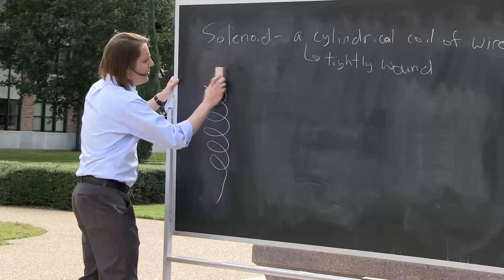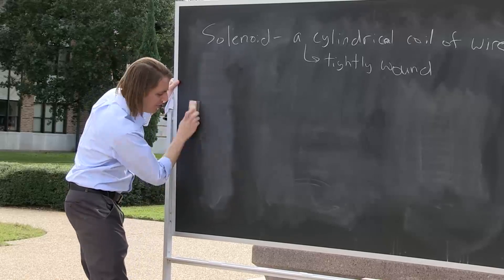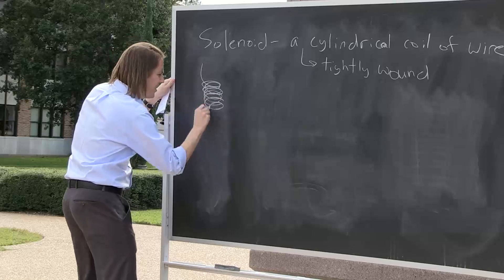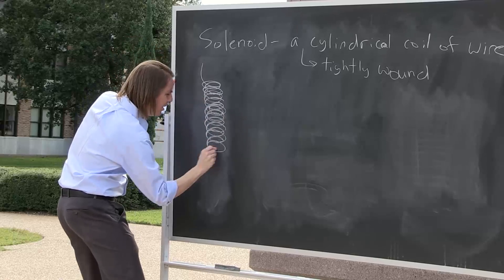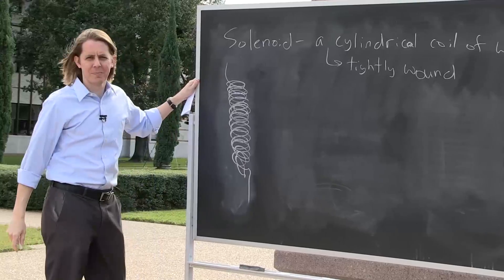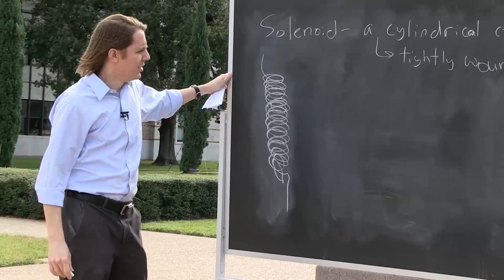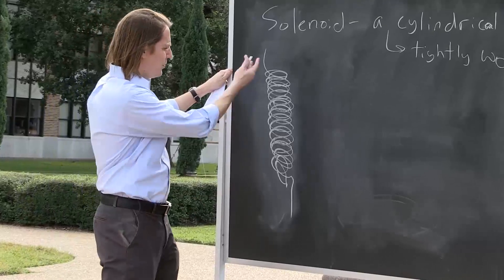It's a tightly wound cylindrical coil of wire. So let me draw something a little bit more realistic. We want to get a big field, so we want a lot of current loops. There's a lot of loops right on top of each other. It just gets harder to visualize if you go and draw it that way.